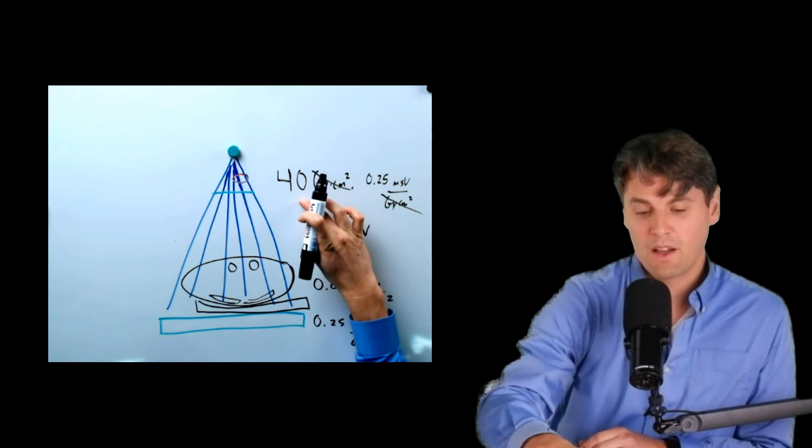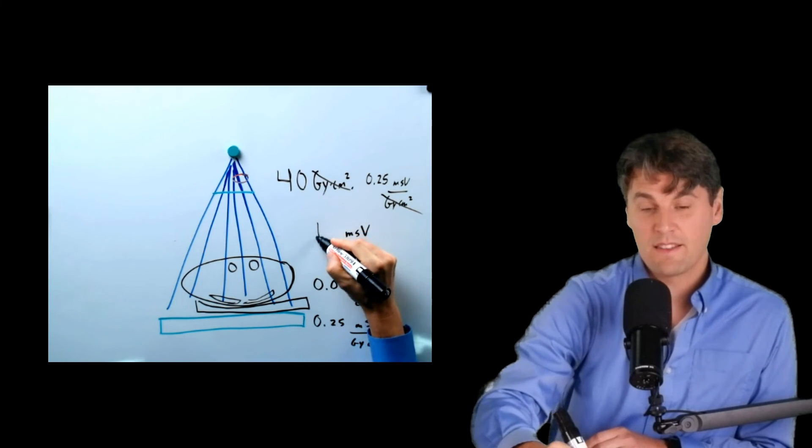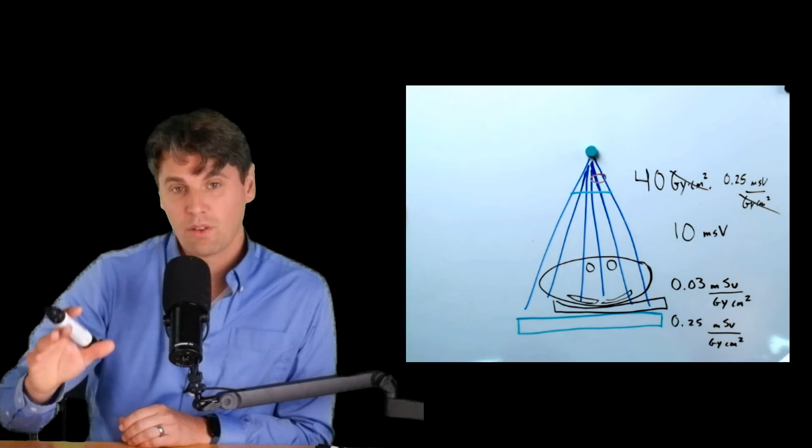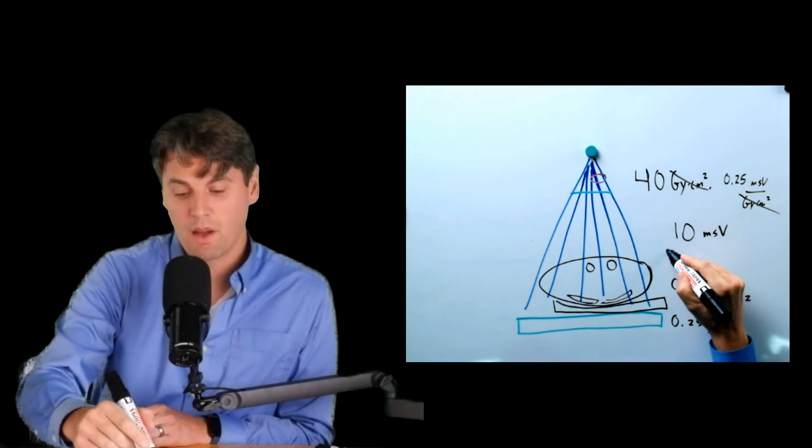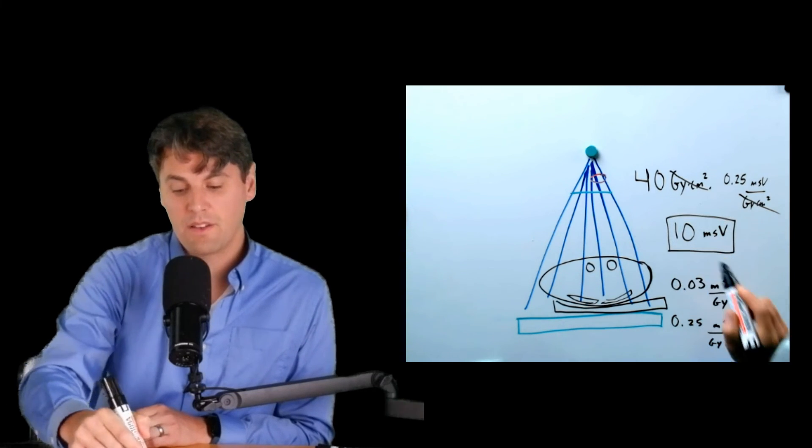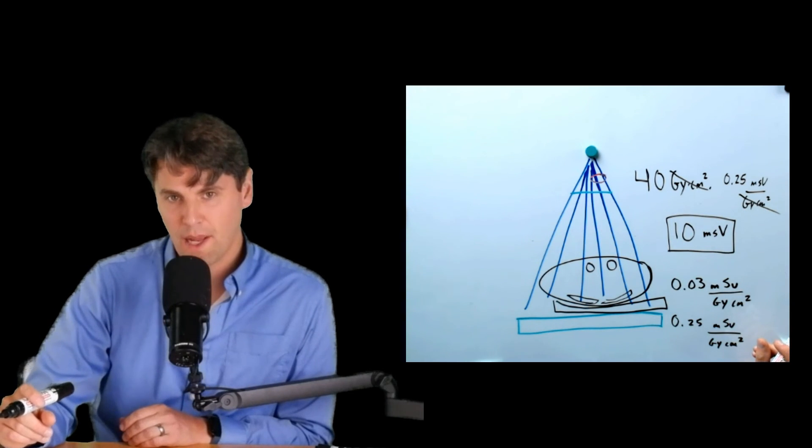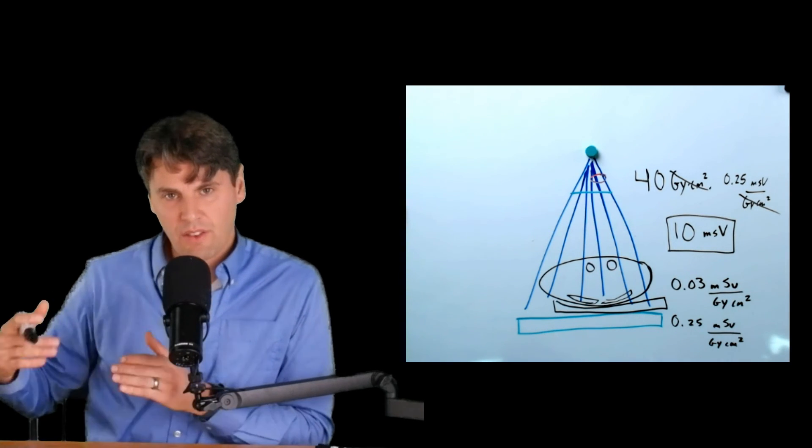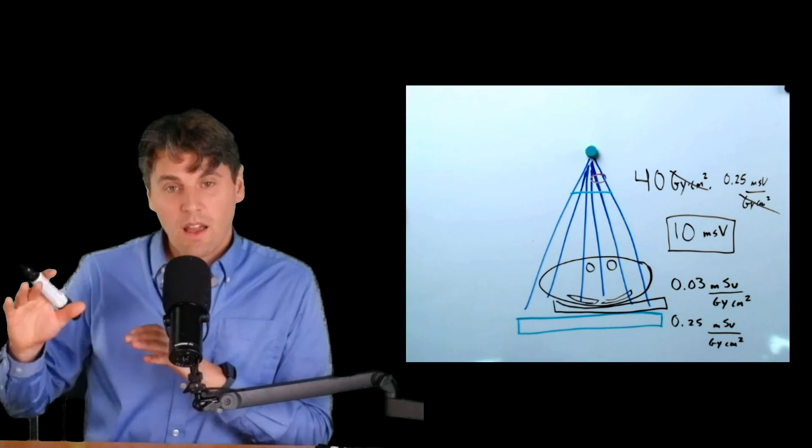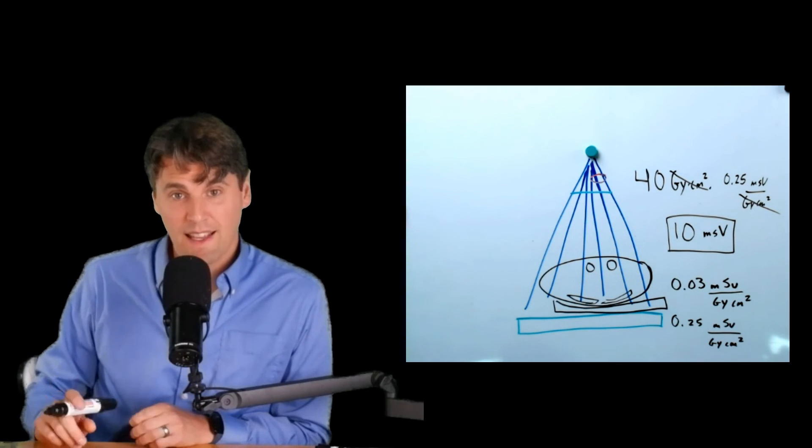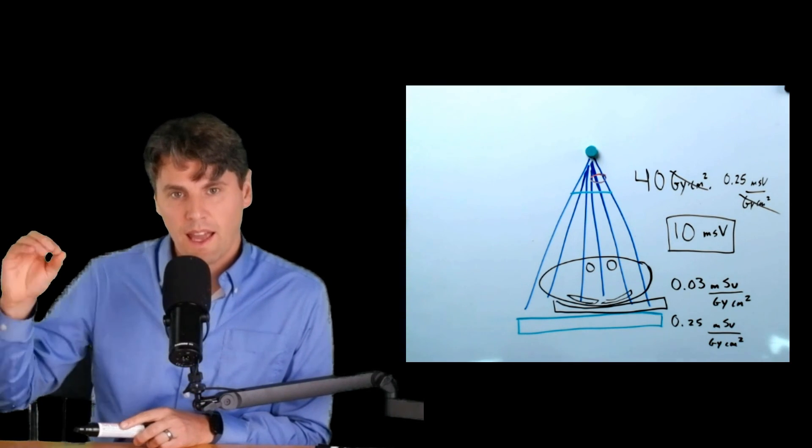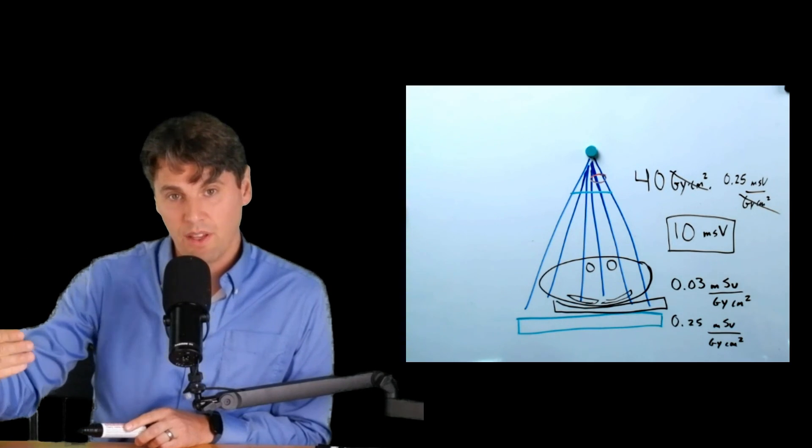The effective dose for this barium enema is about 10 millisieverts. And being able to do these kinds of calculations quickly is nice, so that you can just have a relative order of magnitude. Being able to do these calculations quickly is nice, so you can get a quick feeling as to the radiation dose that the patient is receiving.